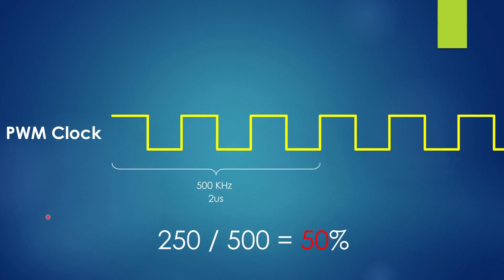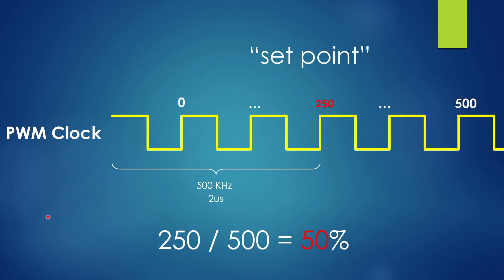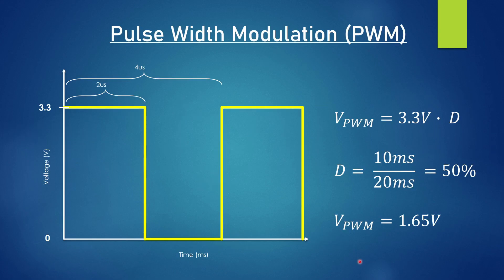To get a 50% duty cycle from that, we take our counter wrap number — 500 — and multiply it by 0.5, giving us 250. That value becomes known as our set point. This gives us a PWM scheme on the Raspberry Pi Pico with a period of 4 microseconds and a 50% duty cycle — similar to the earlier example but with a much shorter period.